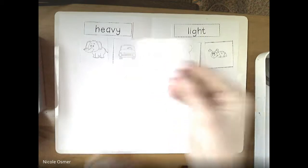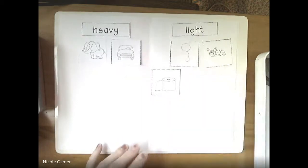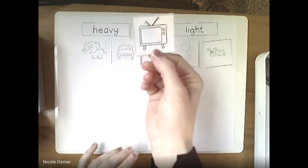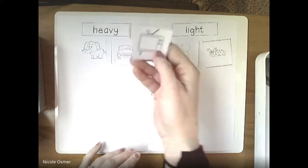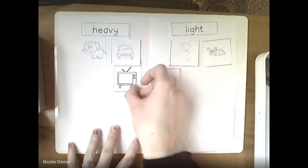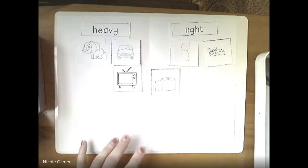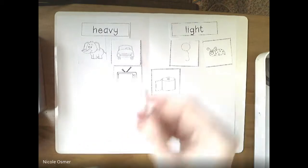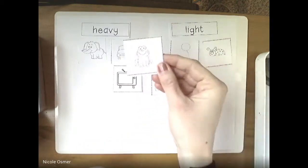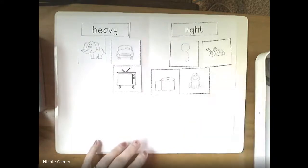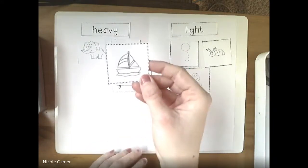Toilet paper? Also light. How about a TV? This is an old-looking TV but typically our televisions are pretty heavy. A frog? Oh it's really hard to see, sorry. Yep, usually can be light. How about a boat?